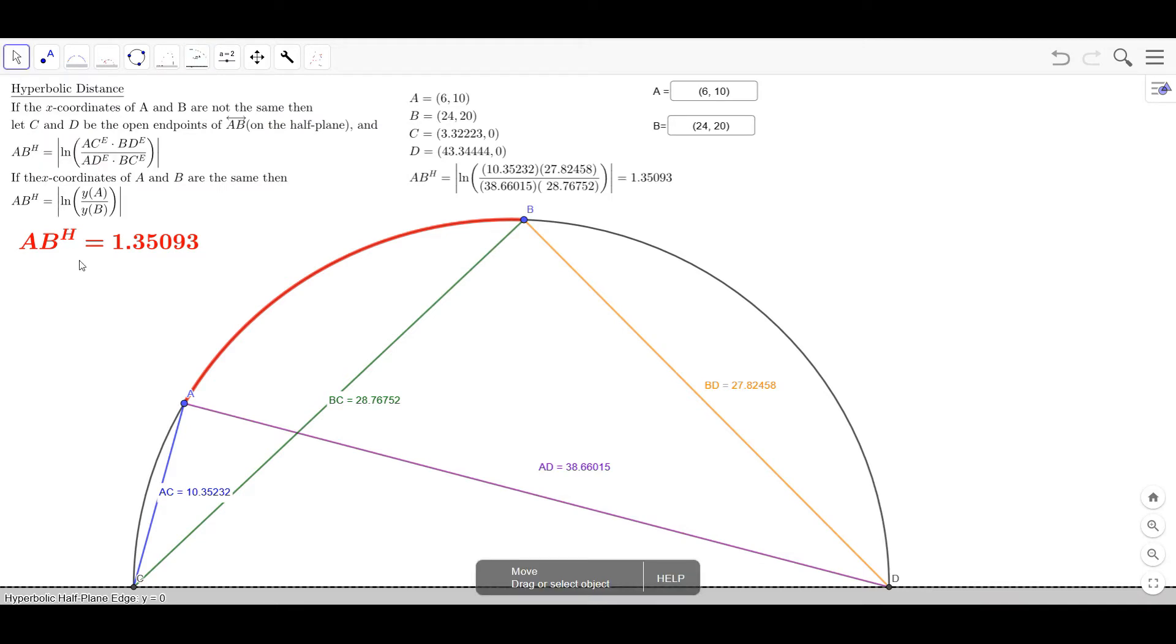Now how is it figuring out this formula? Well basically what you do is you make a hyperbolic line from the point between the two points or through the two points A and B.